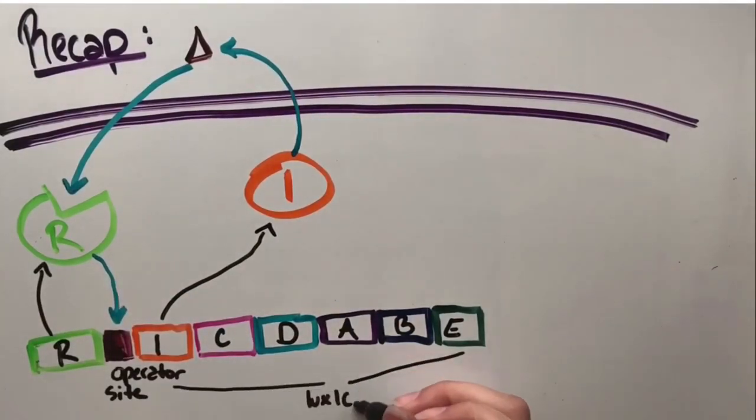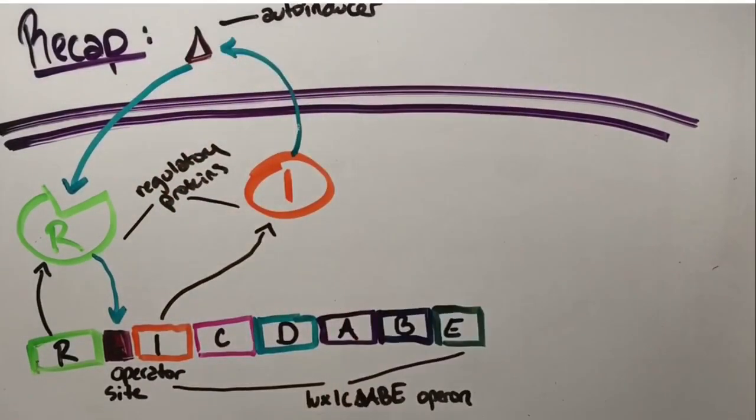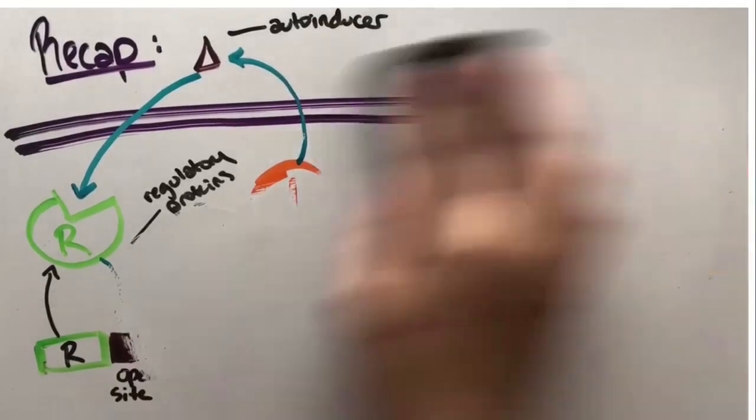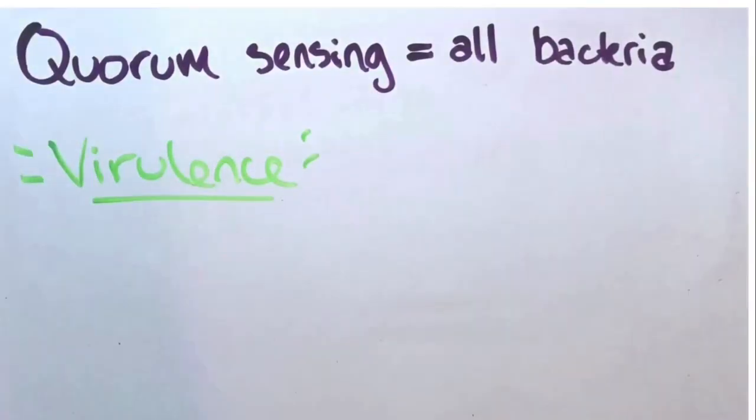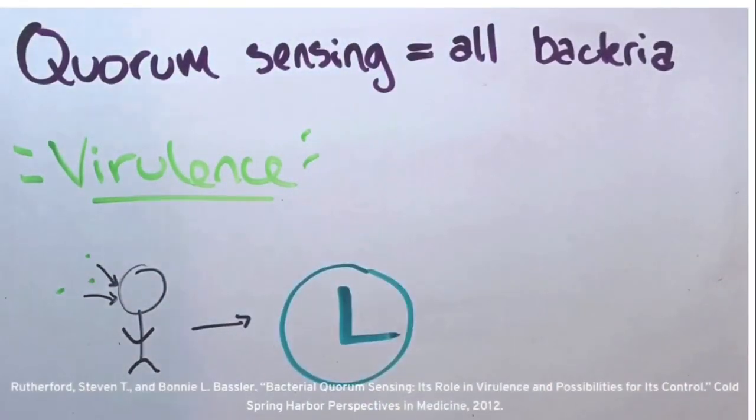In fact, all bacteria have this property, which is why it takes you a few days to exhibit symptoms after contracting harmful bacteria. Those bacteria accumulate in your body, and once they reach a sufficient number, they strike, making the study of this concept crucial for combating virulence.